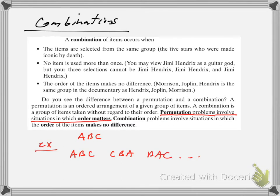Well, in a combination, all of these are the same thing, because they all have an A, B, and a C in them — because we don't care about the order. So if I'm trying to find all the ways to pick three letters from A, B, and C, there's only one way to pick three letters from there, and that would be one combination.